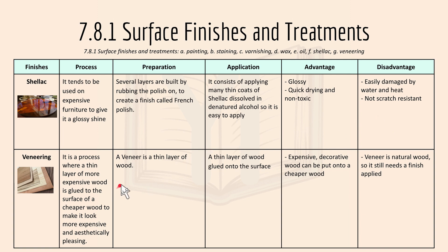Lastly, we have veneering. It's a process where a thin layer of more expensive wood is glued onto the surface of often cheaper wood, to make it more expensive and more aesthetically pleasing. A veneer is basically a thin layer of wood glued onto the surface using different adhesives. The advantage is that expensive and decorative wood can be put onto cheaper wood to make it look more expensive and nice-looking. The disadvantage is that veneer is a natural wood, so it still needs to have a finish applied onto it.